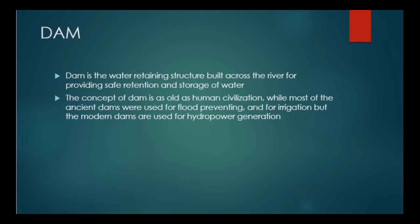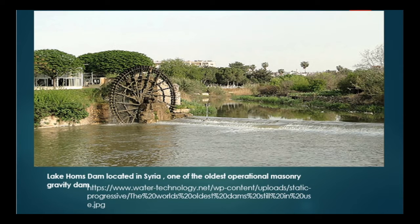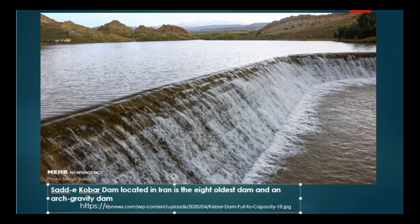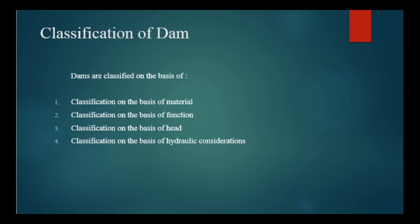Here are some examples of ancient dams. This is the Lake Homs dam, situated in Syria, and it is one of the oldest operational masonry gravity dams. This is the Kallanai dam, also called the Grand Anicut, serving the people of Tamil Nadu, India. This is the Sadd el-Kafara dam, situated in Iran, and it is the eighth oldest dam.